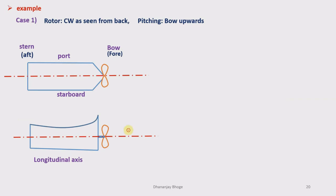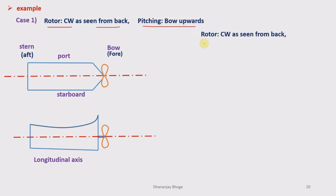The pitching motion will change the direction of the spin axis, which is the axis of rotation of the rotor, and hence a gyroscopic torque is induced. Now let us take an example where the rotor rotates in a clockwise sense as seen from the rear side of the ship, and the bow is rising upwards during pitching.